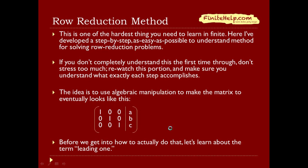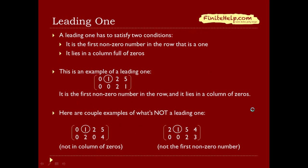Before we get into how to actually do that, we're going to first learn about the leading 1. A leading 1 has to satisfy two conditions: it's the first non-zero number in the row that is a 1, and it lies in a column full of zeros. Here's an example: it's the first number in the row, it's a 1, and it is in a column full of zeros.